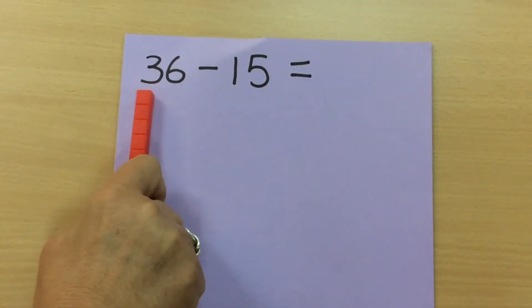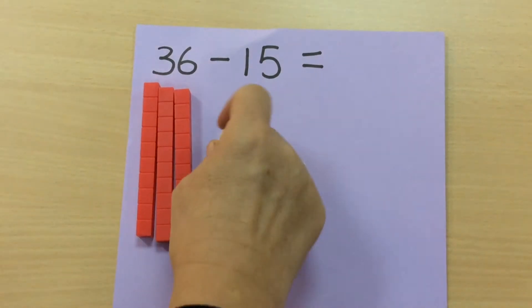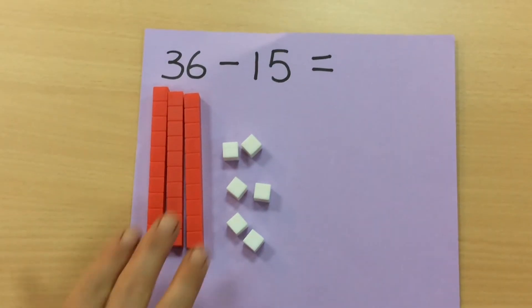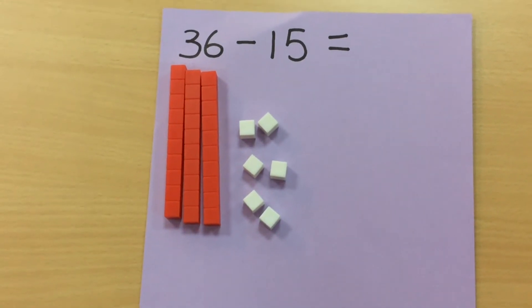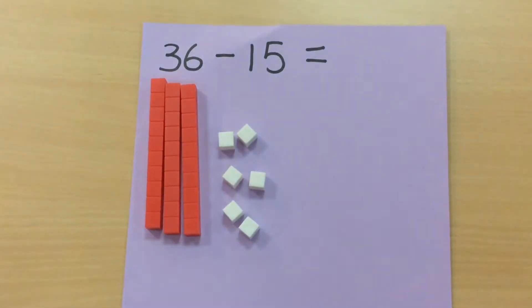So they'll be counting it out, 10, 20, 30, so three tens, and two, four, six ones. So they've got 36, and they are subtracting 15, which is one ten and five ones.